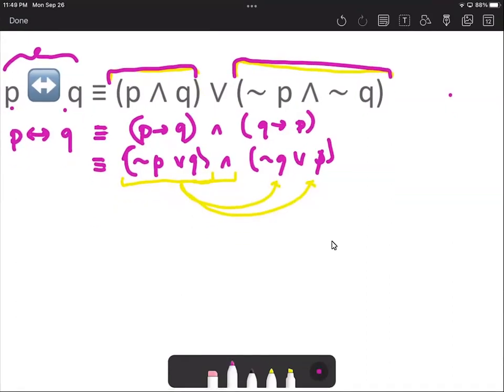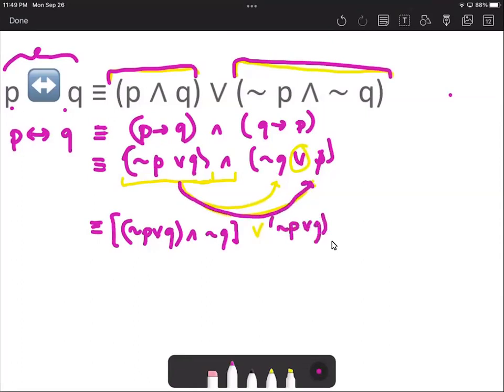So then it will result in not p or q and the first not q, getting the connective or. So we have not p or q and p.